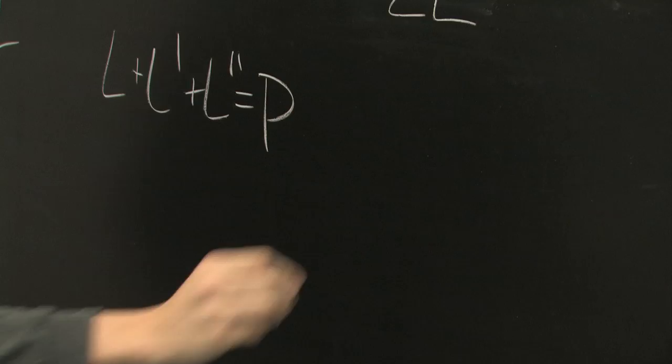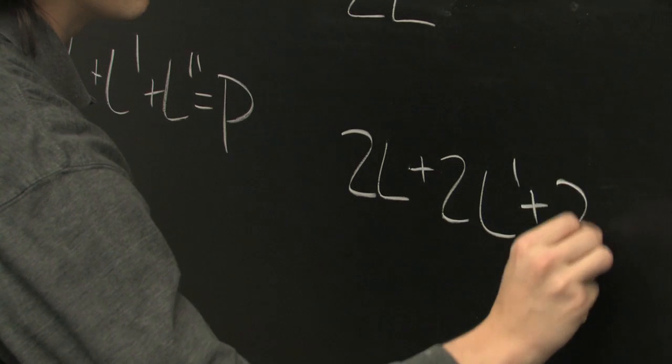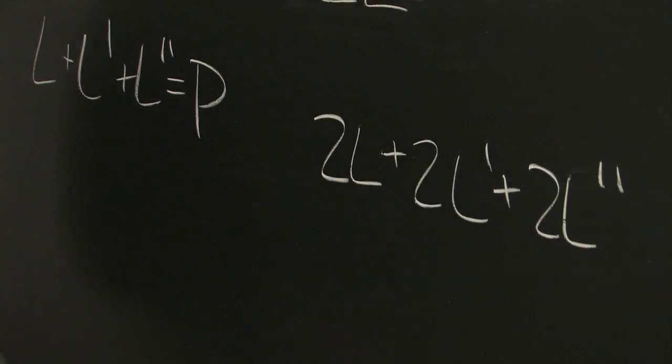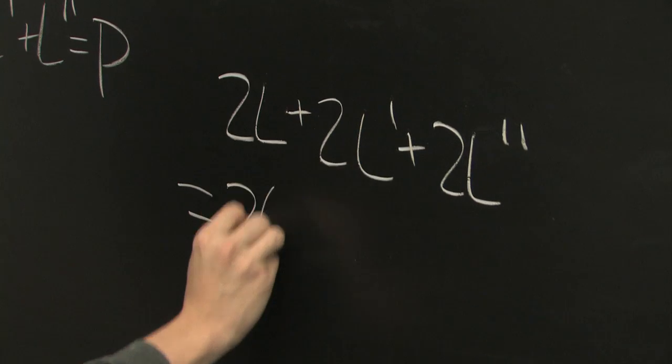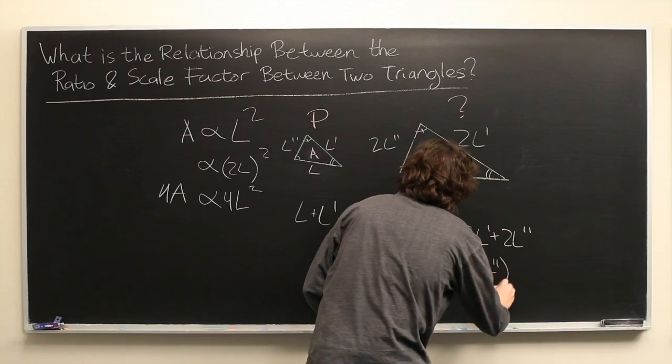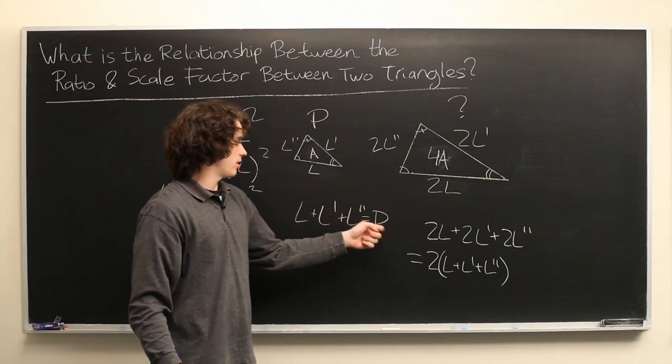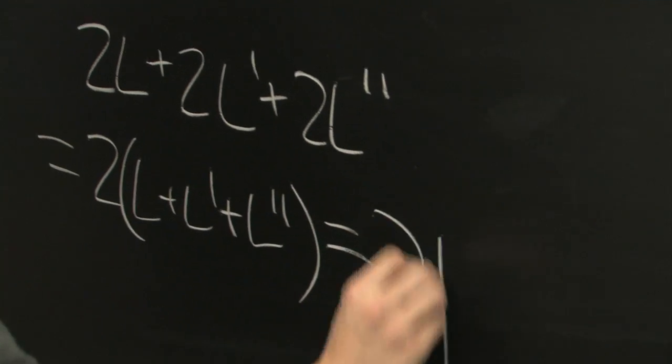So, if we have L plus L prime plus L double prime is equal to P. Now, we have 2L plus 2L prime plus 2L double prime. Well, we can simply rewrite this as 2 times (L plus L prime plus L double prime). Well, we see right here that this is equal to P. So, the whole thing just becomes 2P.